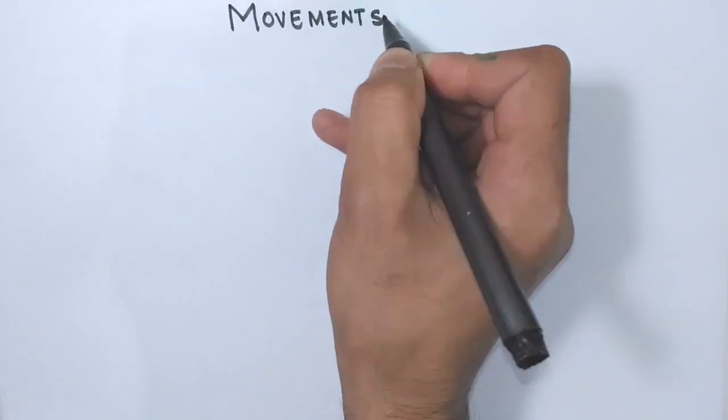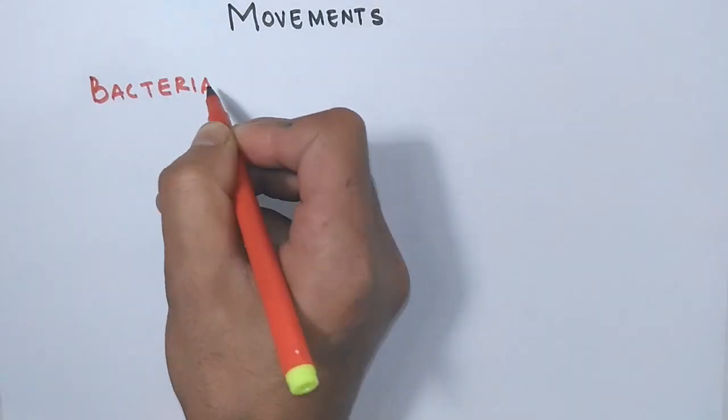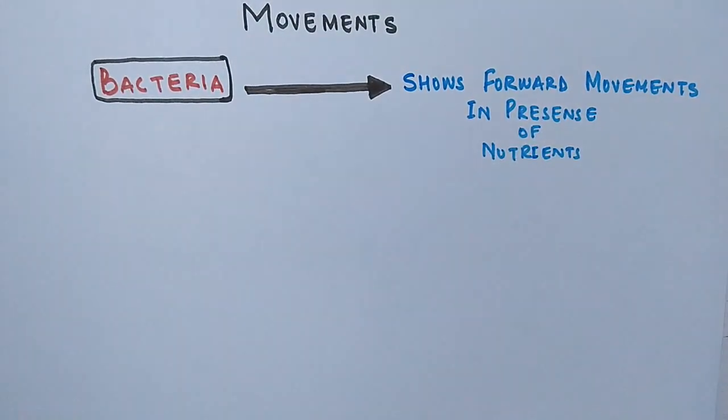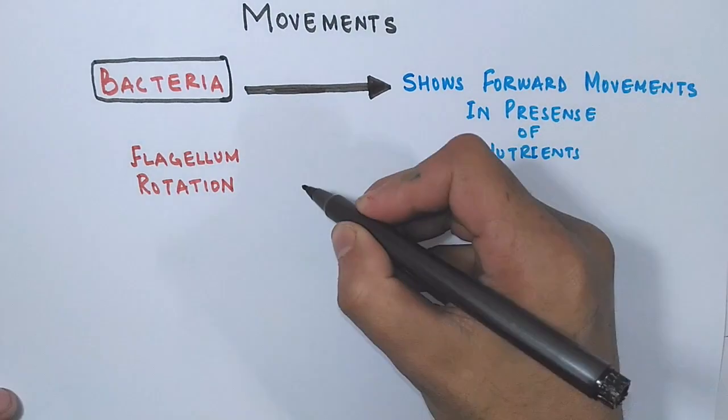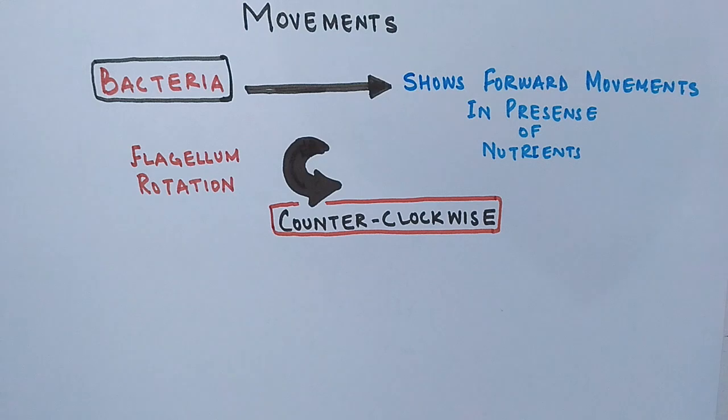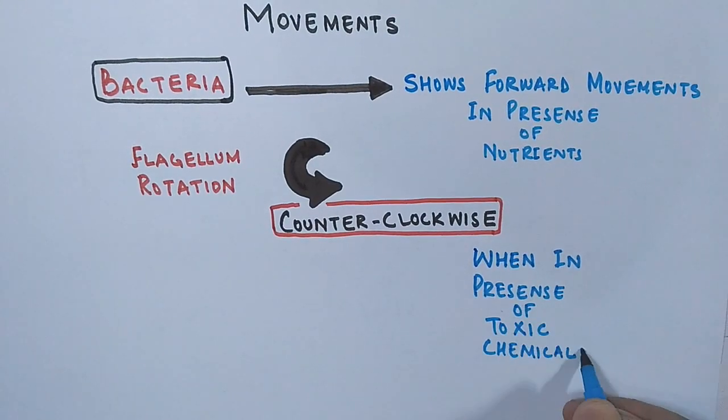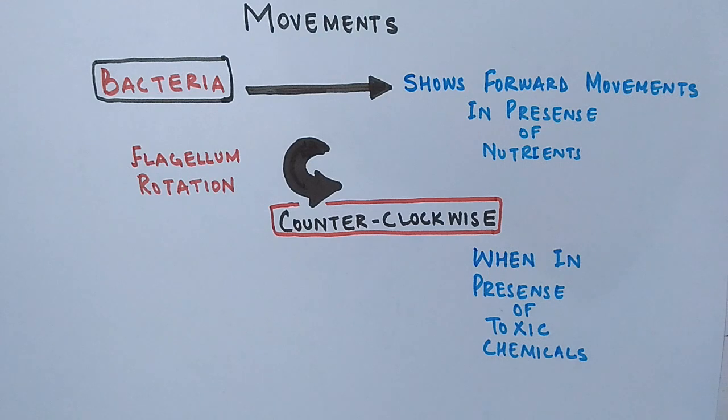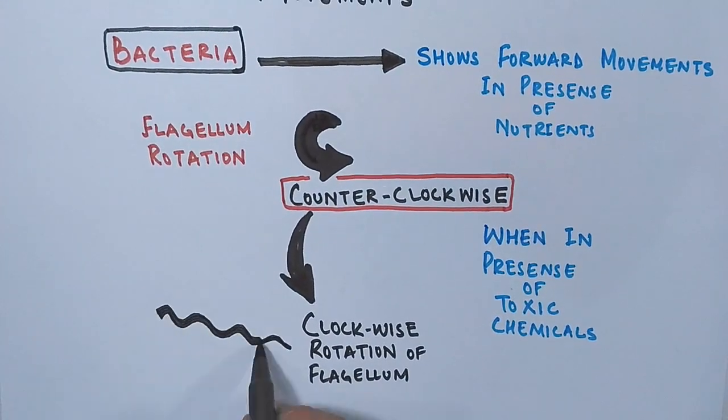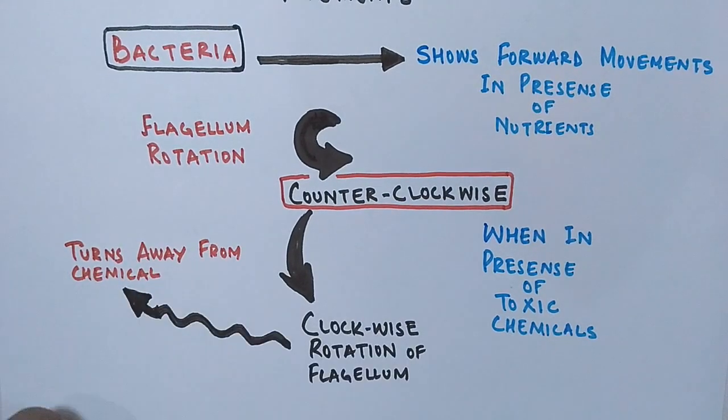Now let's see the movements in bacteria depending upon the substances which bacteria encounters. First of all, bacteria shows forward movements in presence of nutrients, and at that time the flagellum rotation is counterclockwise. But when there is presence of any toxic chemicals in its vicinity, the counterclockwise movement will be switched to clockwise rotation of the flagellum, and the bacteria will go away from that substance.